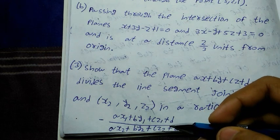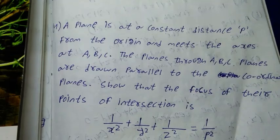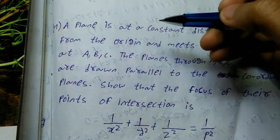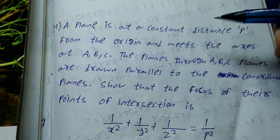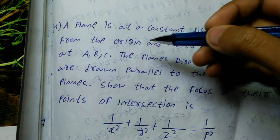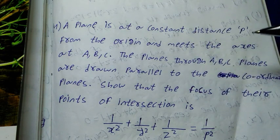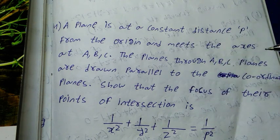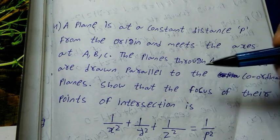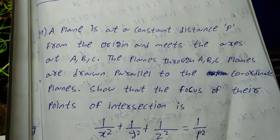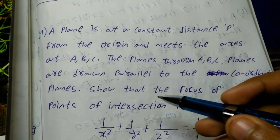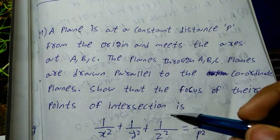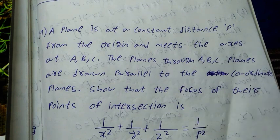Number 4 question: a plane is at a constant distance p from the origin and meets the axes at A, B, C. Planes are drawn parallel to the coordinate planes through A, B, C. Show that the locus of their point of intersection is 1/x² plus 1/y² plus 1/z² equal to 1/p².